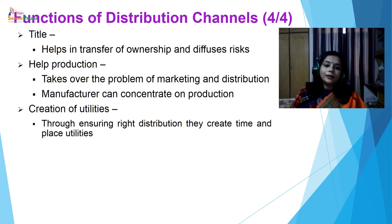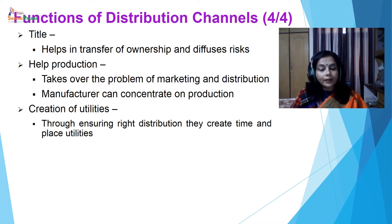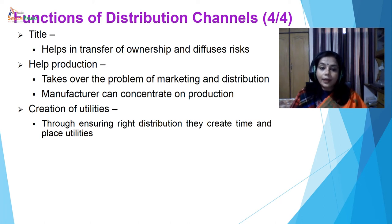The next function is title. They help in transfer of ownership and diffuse the risk. Another function is helping in production — they take over the problem of marketing and distribution so the manufacturer can concentrate on production only. And finally, creation of utilities: they ensure right distribution and create time and place utilities, which also increases the value of the products.